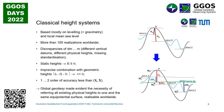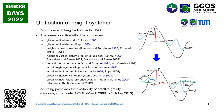The motivation was to establish a global unified height system with the objective to refer all existing heights to the same equipotential surface or the same reference level. This is a topic that has been discussed in the frame of the IAG since the 1980s. I list here the main publications around this topic.